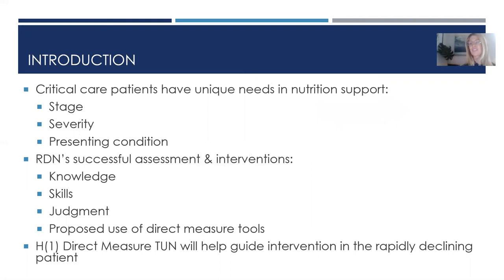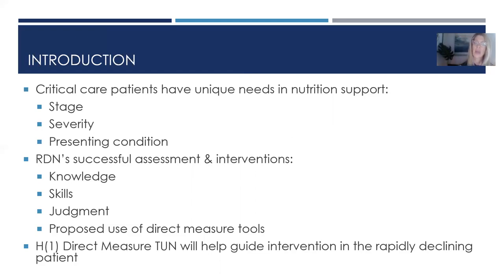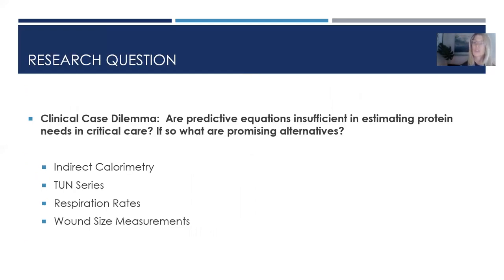In terms of an introduction, critical care patients have unique needs in nutrition support depending on the stage and severity of the presenting condition. A dietitian's successful assessment and intervention is going to rely on their knowledge base, the skills they have, the judgment they apply, and also this proposal to use direct measure tools. The hypothesis is to identify if direct measure TUN will help guide interventions in a rapidly declining patient. The research question: are predictive equations insufficient in estimating protein needs in the critical care patient? And if so, what are the promising alternatives?